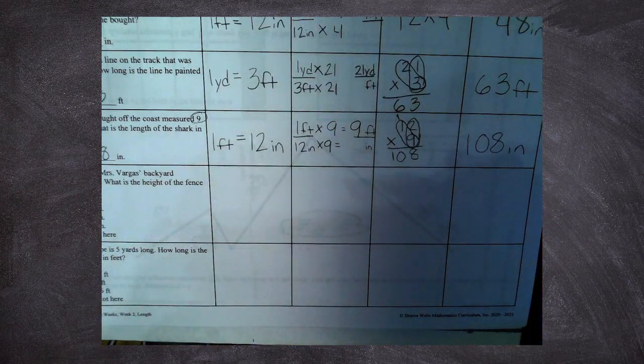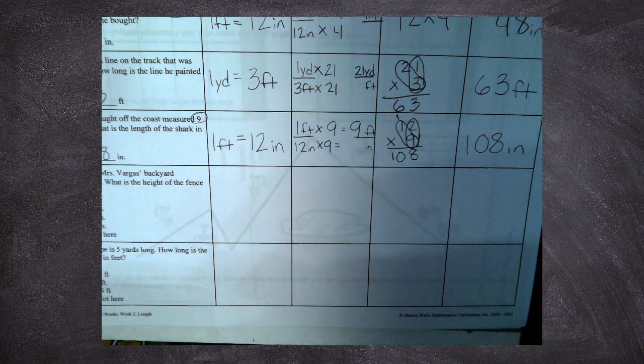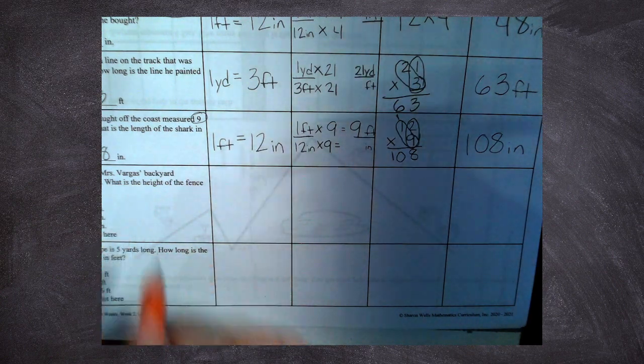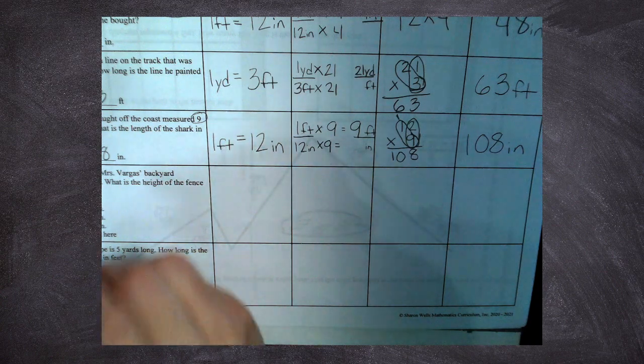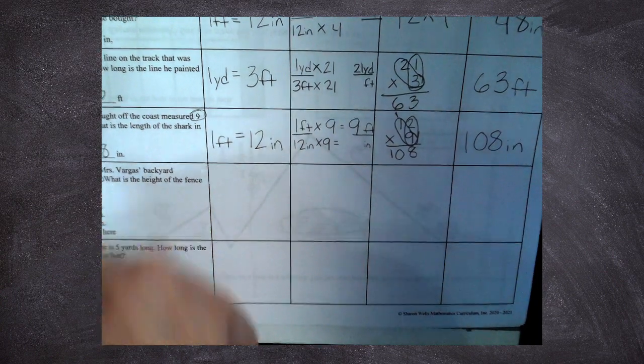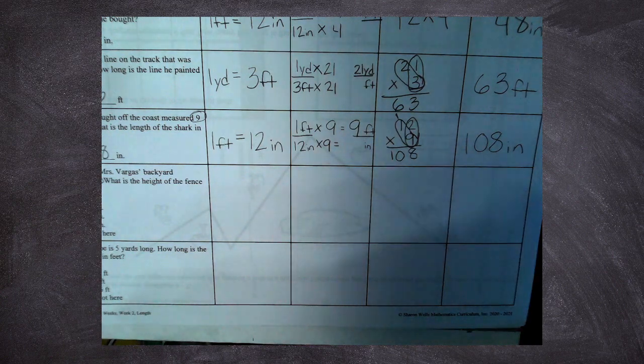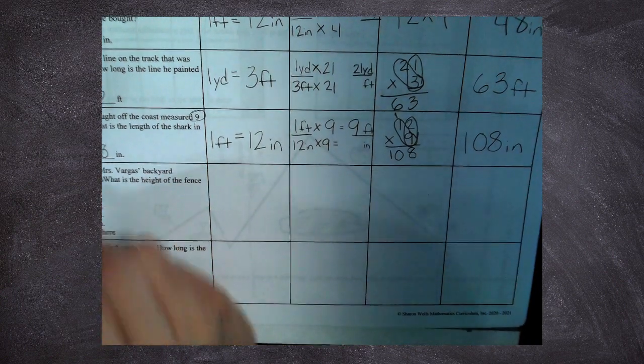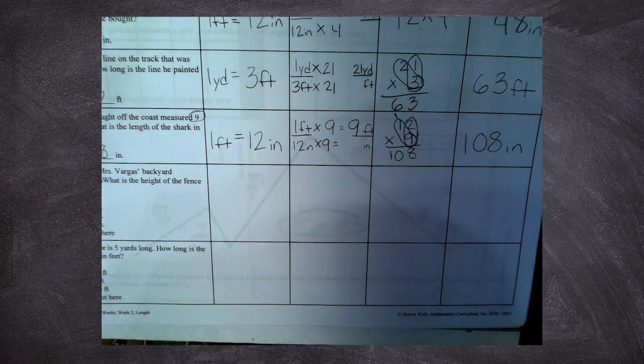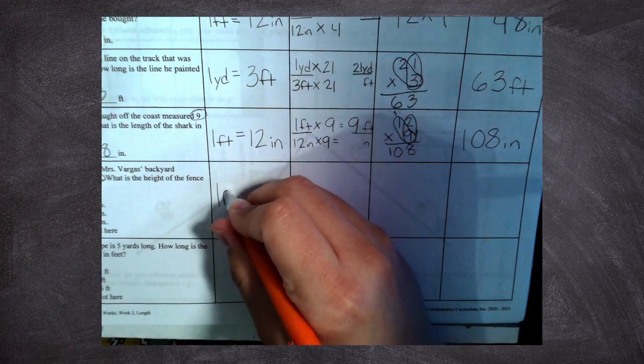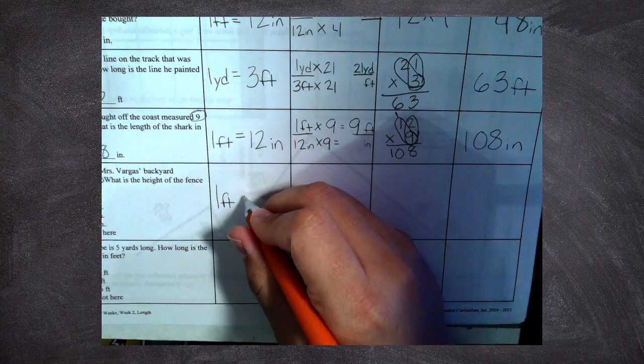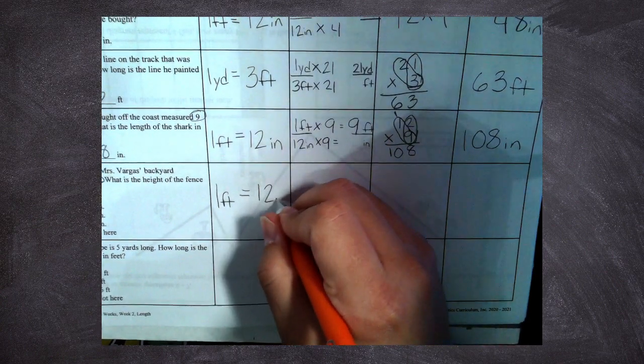The fence in Mrs. Vargas's backyard is seven feet high. What is the height of the fence in inches? So the fence was seven feet high, they've already measured it, but the problem is that they should have measured it in inches, so we've got to change it. I know that one foot is equal to twelve inches.